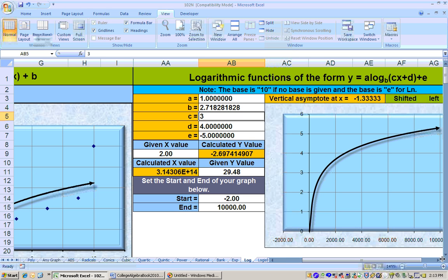And negative 4 thirds is the same as negative 1 and a third. So if we would look at this graph, there's actually a vertical asymptote at negative 1 and 1 third or negative 4 thirds.